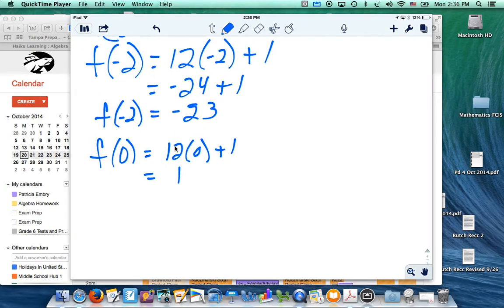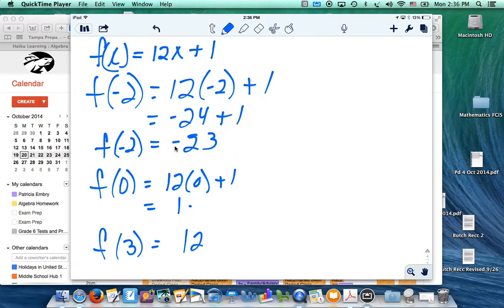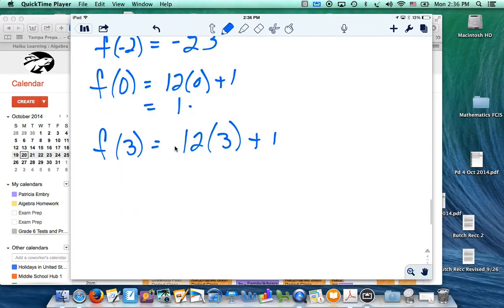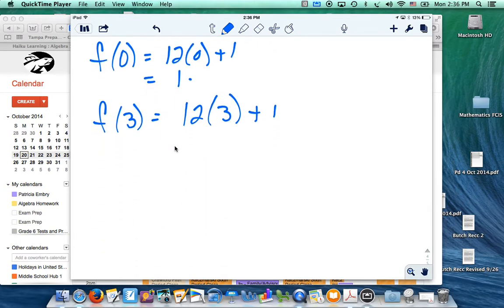And f of 3, 12 times 3, 36, plus 1. So, f of 3 is 37.